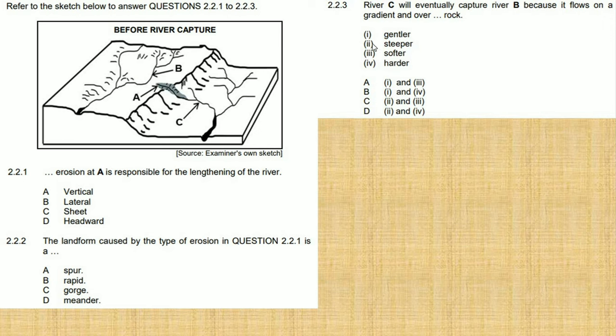So your answer will be steeper and softer. Let's see, it's two and three, so your answer is D, which is steeper. No, the answer is actually C. Yes, your answer is C, it forms steeper and three which is softer rock.